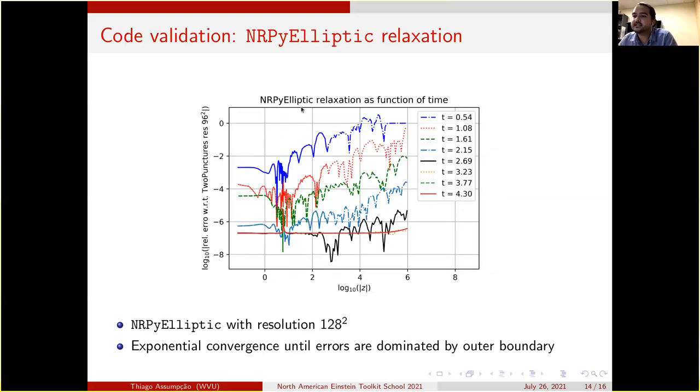And this is a NRPyElliptic solution as a function of the relaxation time. We see exponential convergence until the errors are dominated by the outer boundary, and at which point it takes a little bit more time for the solution to become homogeneous along the whole grid.